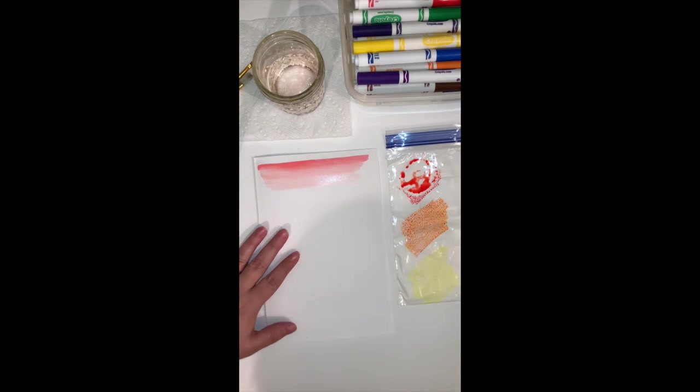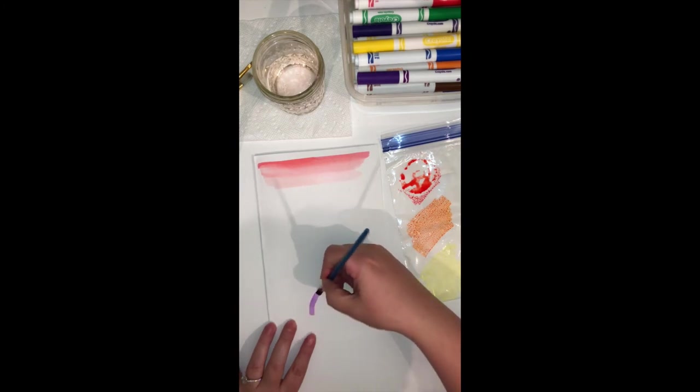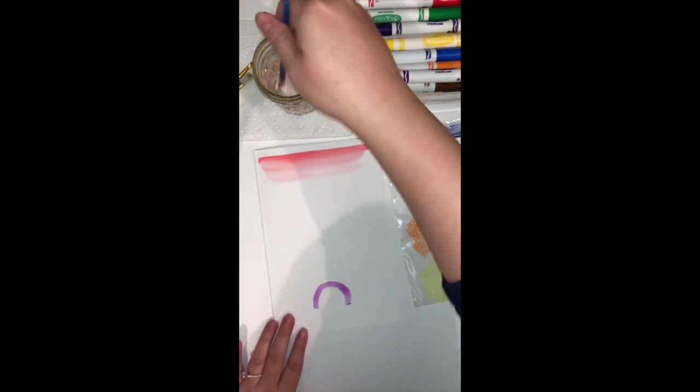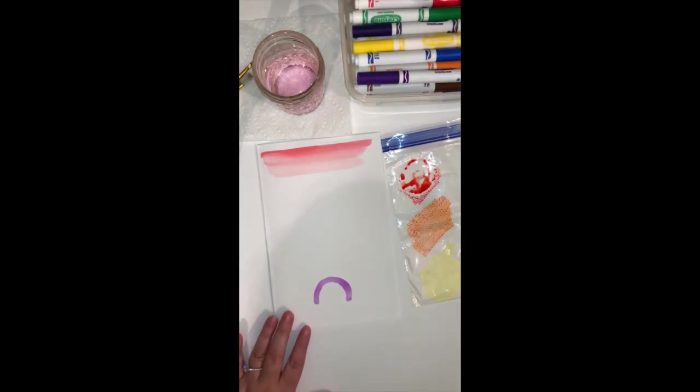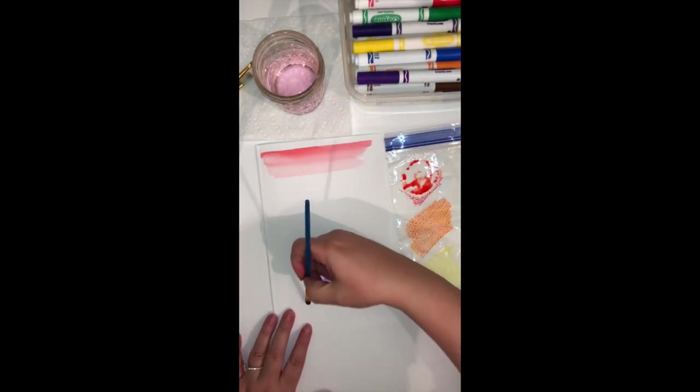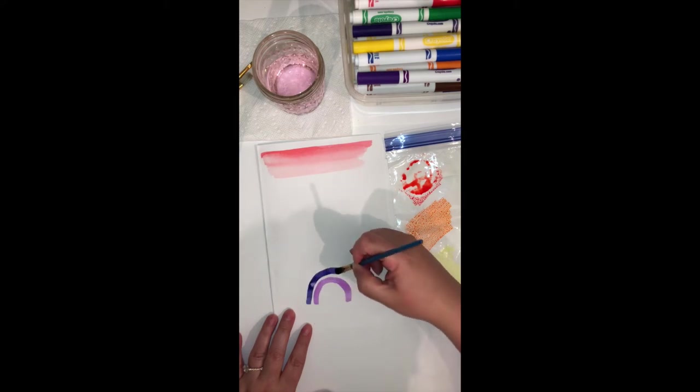After I've practiced making my gradient, I'm going to move on to my rainbow. So what I'm gonna do is I'm gonna clean my brush, I'm gonna get that first color—that violet color—and I'm going to paint an arch on my paper. An arch is the same thing as a curved line, just imagine what a rainbow looks like.